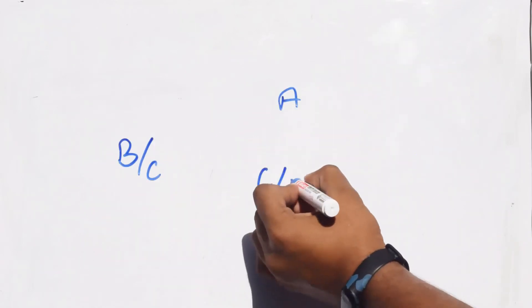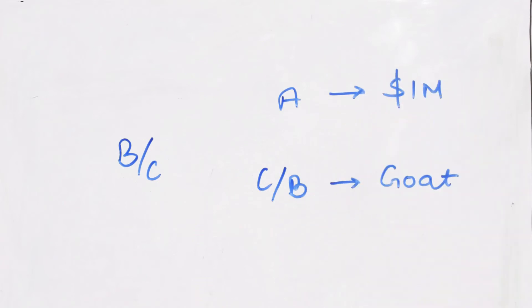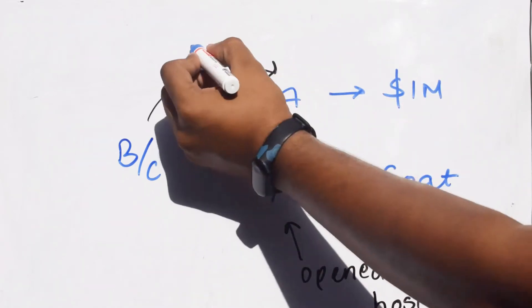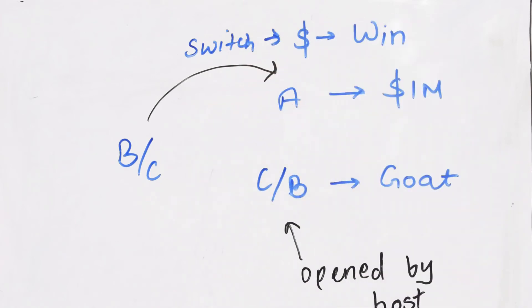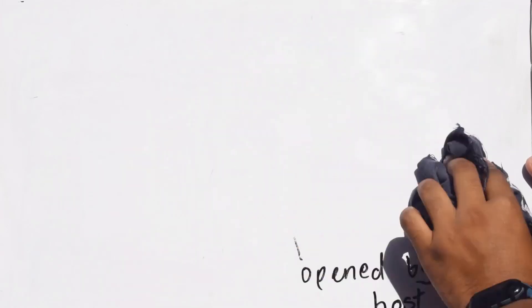Now in the scenario that you chose the wrong door initially, as the host knows which door has the money behind it, he is forced to open the remaining door with a goat, leaving the door with the money closed.